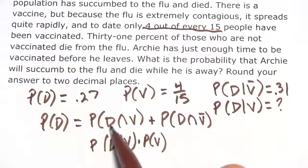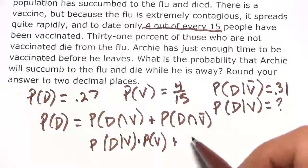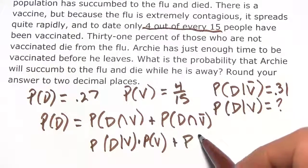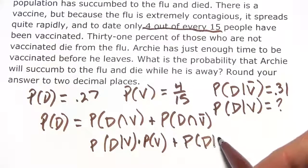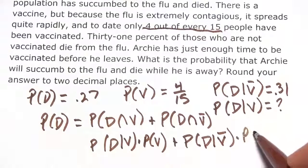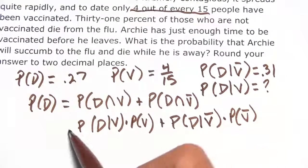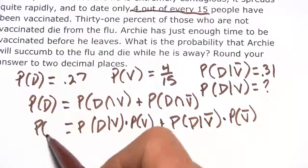This is the same as this, just another way of writing it. Similarly we can do that here. This is the probability of dying given you haven't been vaccinated times the probability of not having been vaccinated. And this all equals the probability of dying.